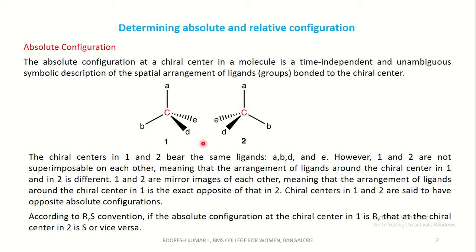The chiral centers 1 and 2 bear the same ligands, A, B, D, E. However, 1 and 2 are not superimposable on each other, meaning the arrangement of ligands around the chiral center in 1 and 2 is different — they are mirror images of each other. The chiral centers in 1 and 2 are said to have opposite absolute configurations.